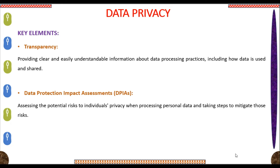Next is Transparency — providing clear and easily understandable information about data processing practices, including how data is used and shared. The last key element of data privacy is Data Protection Impact Assessments (DPIAs) — assessing the potential risks to individuals' privacy when processing personal data and taking steps to mitigate those risks. So this was all about data privacy.